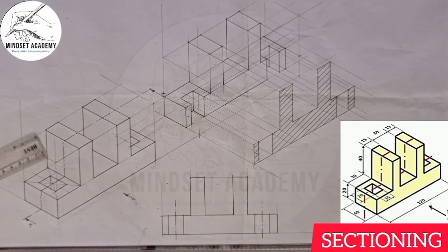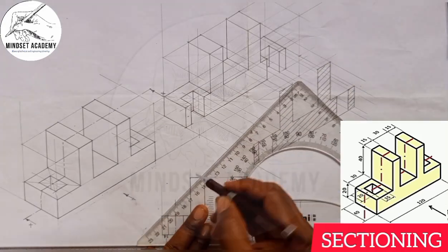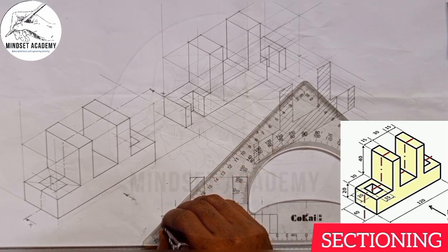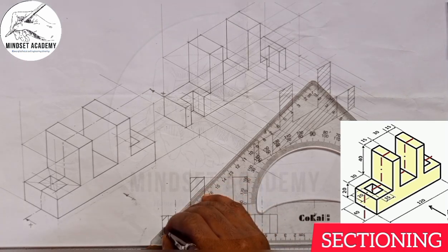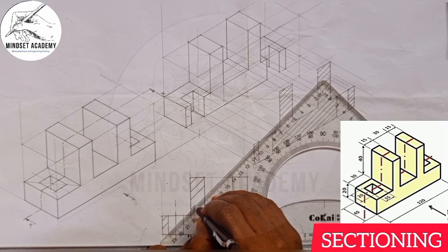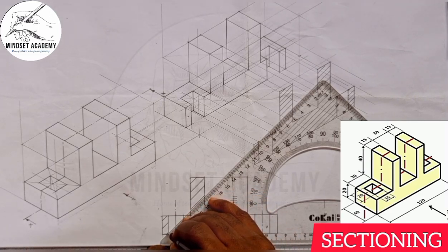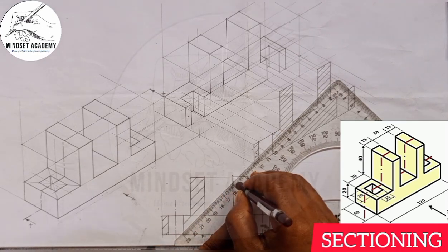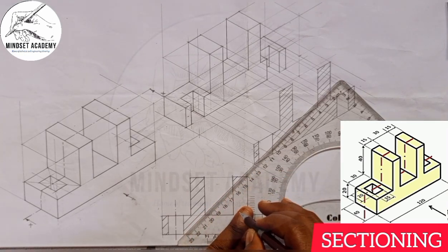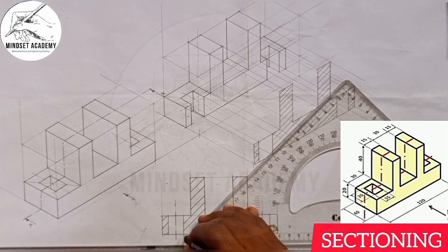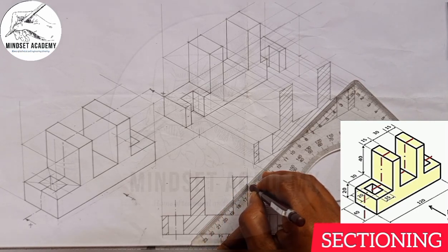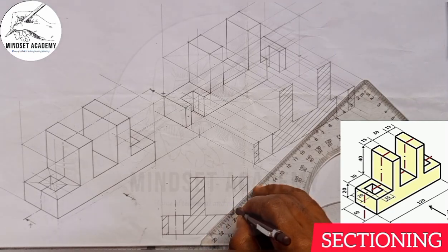Now I will start sectioning using my 45-degree square. From here I'll leave a space, then from here leave a bigger space again, and from here give a bigger space again, then from here a bigger space again, and from here the same thing, and from here also the same thing, and then from here the same thing.